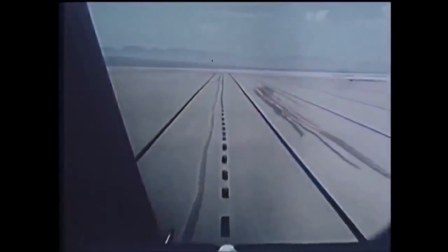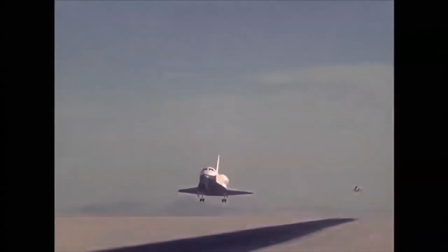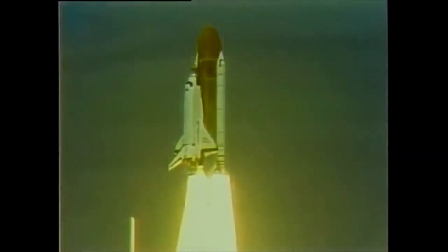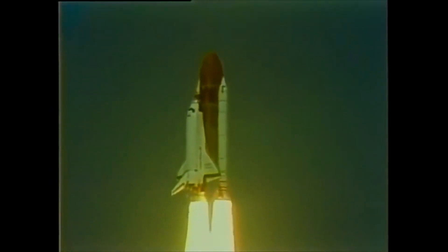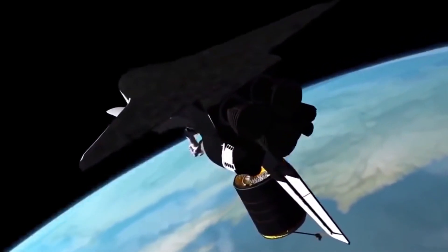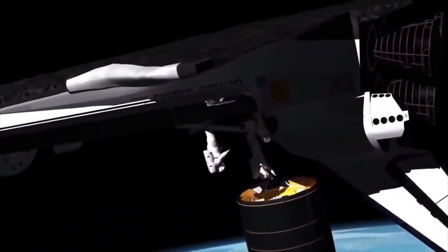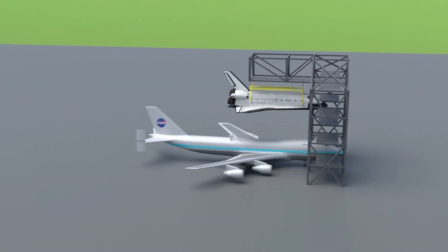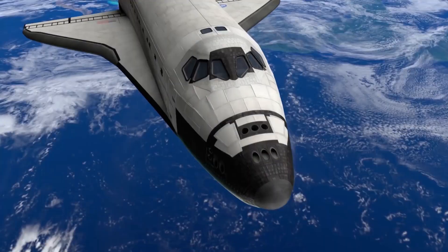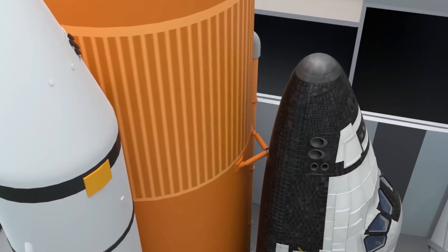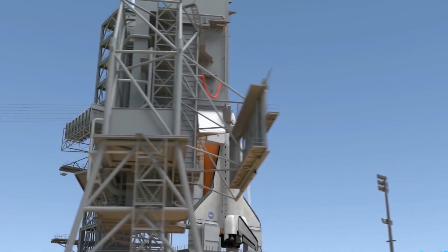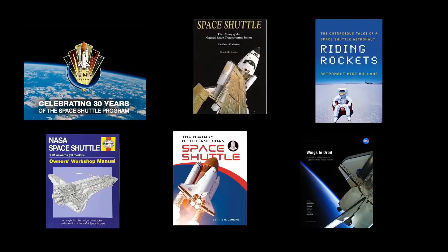In addition, the orbiter was equipped with several systems to make it more effective, including the thermal protection system, which protected the orbiter from the extreme temperatures of re-entry into Earth's atmosphere, the guidance and navigation system, which allowed for precise control of the orbiter during the mission, and the environmental control system, which provided the necessary oxygen, water, and temperature regulation for the astronauts during the mission. The manufacturing process of the orbiter was complex and required a significant budget.